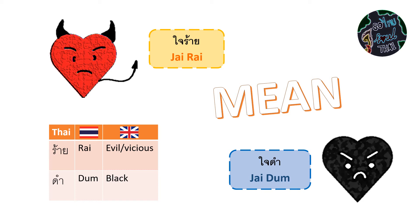Remember, the word zai means heart and the word rāi means evil or vicious. The word zai dām means black, as in colour. So zai rāi is like your heart is so evil, and zai dām is like your heart is already black. So both of them are not good — that's mīn.